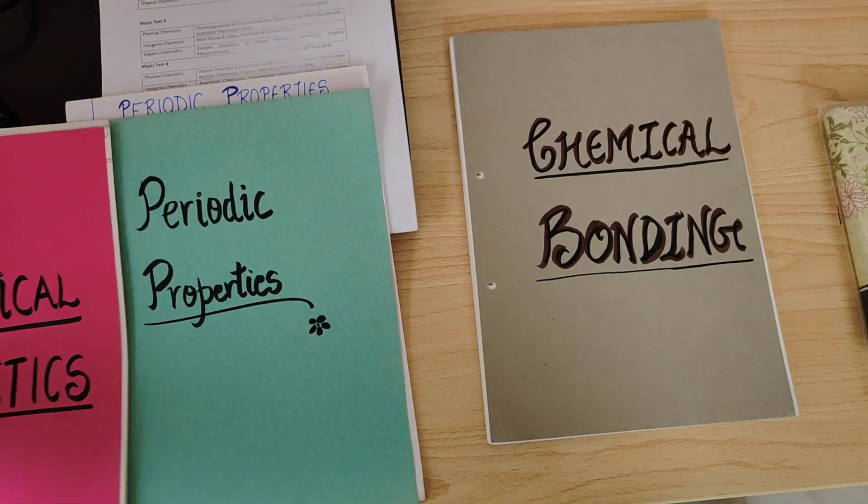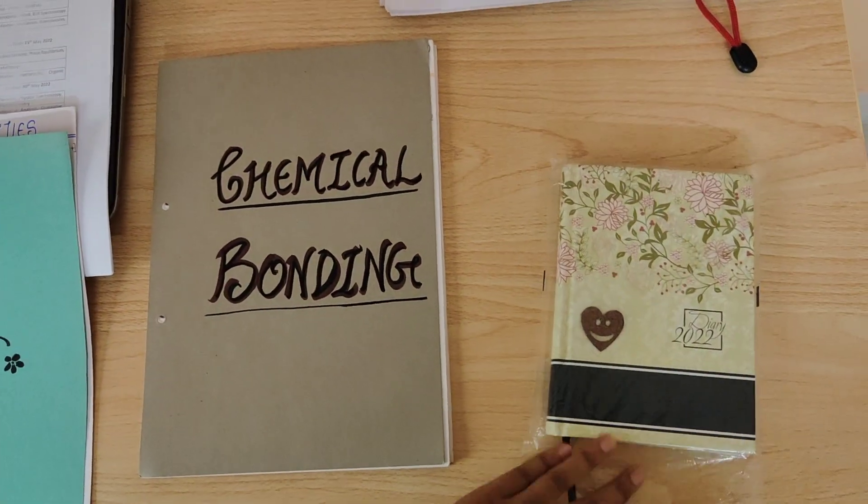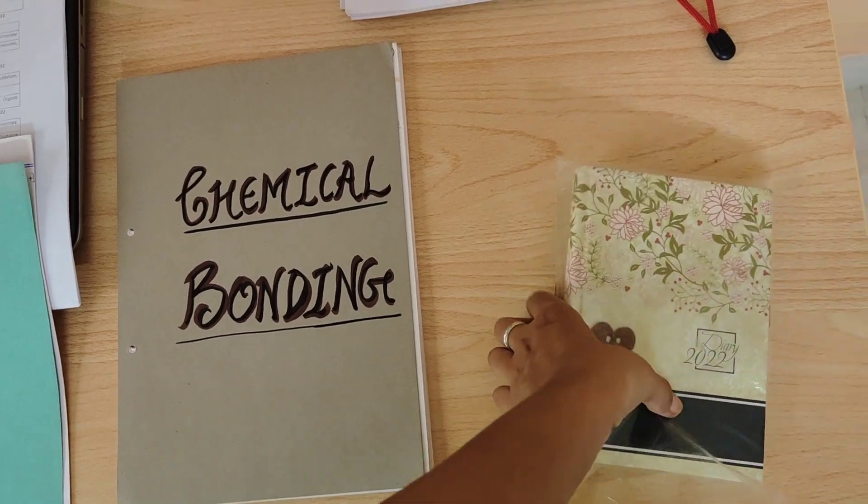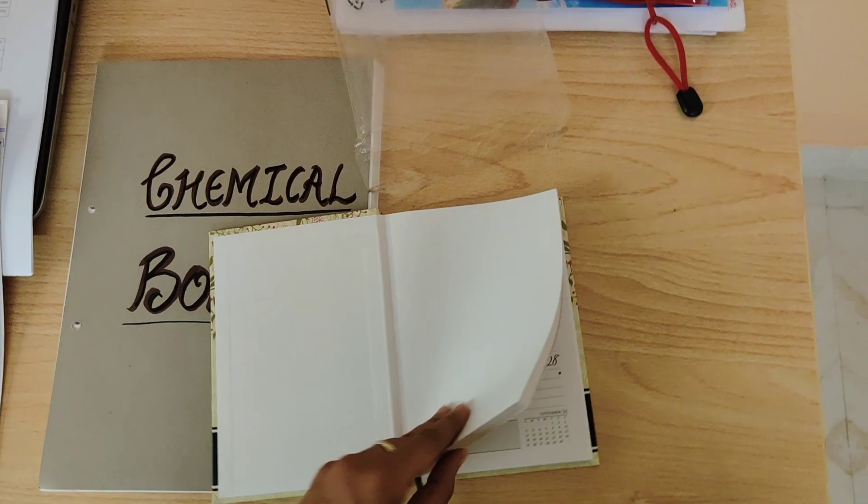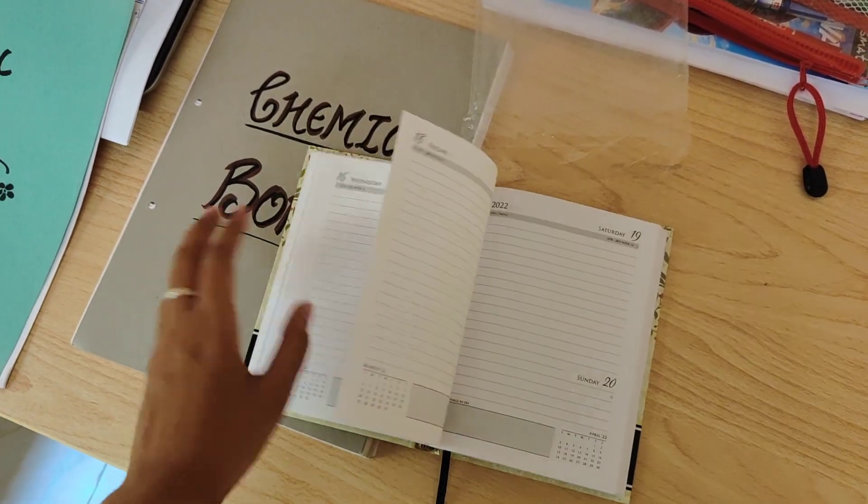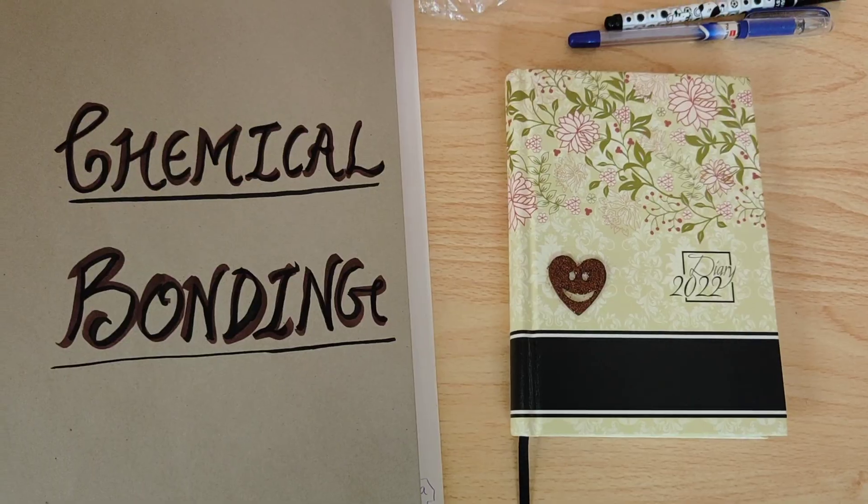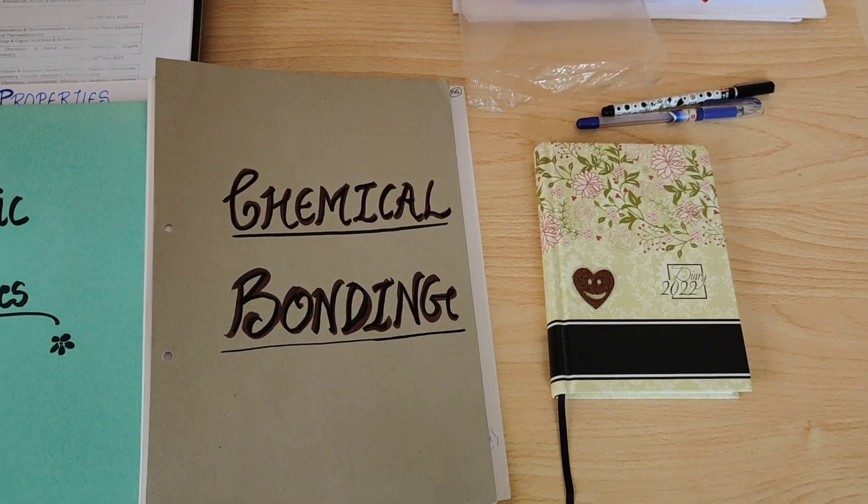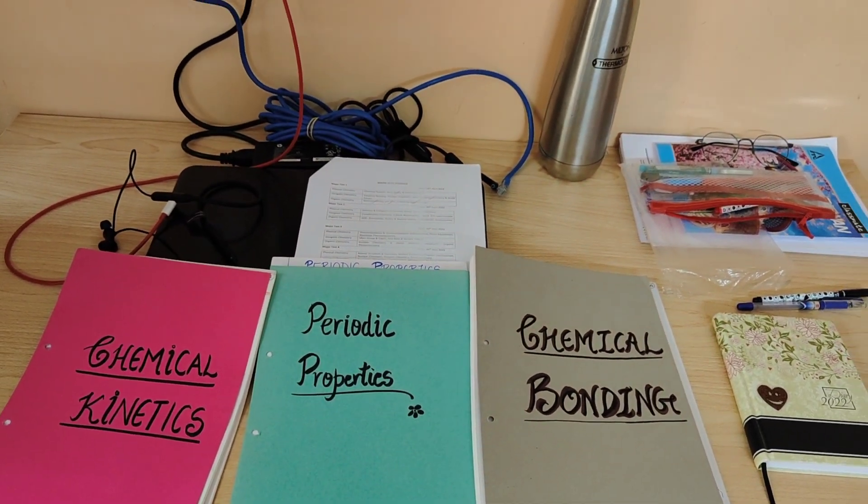So this is my diary, let me open this and I should write my target. So I have written my target in my diary and I will go to breakfast and then I will go to library.